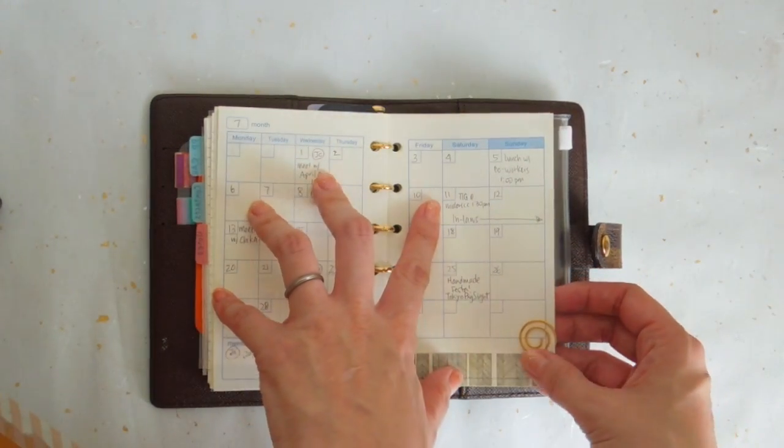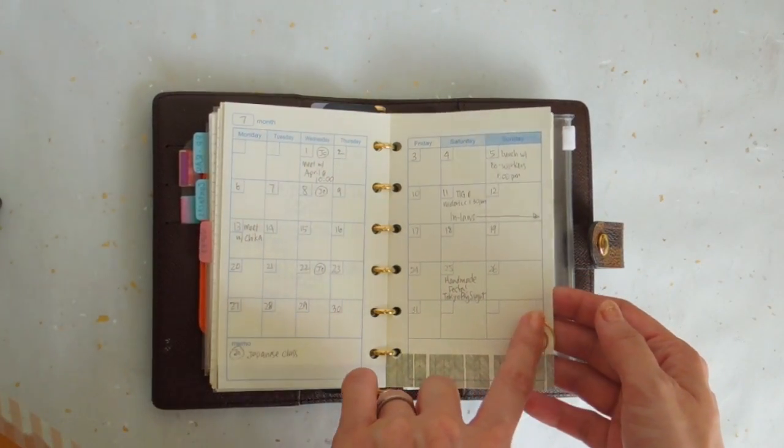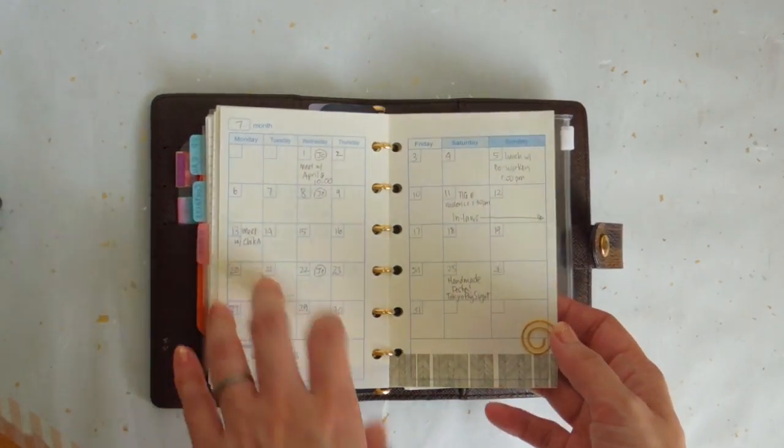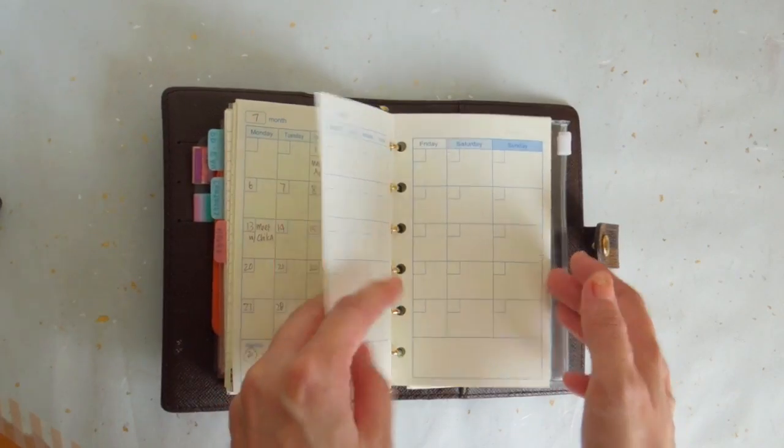And then for my appointments I keep them on a month on two page view. This is the month on two page view. I have the gold paper mark to match with the gold hardware. Like I said, I don't have much going on, so this is just perfect for me. Nice and small and easy to carry.